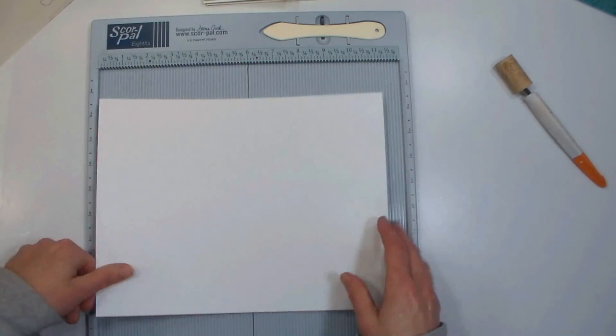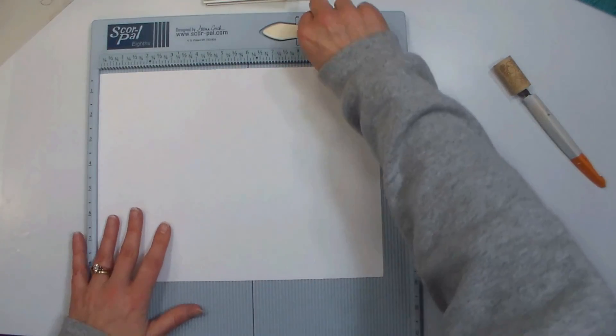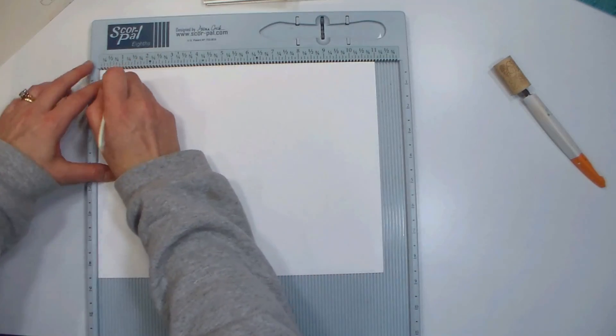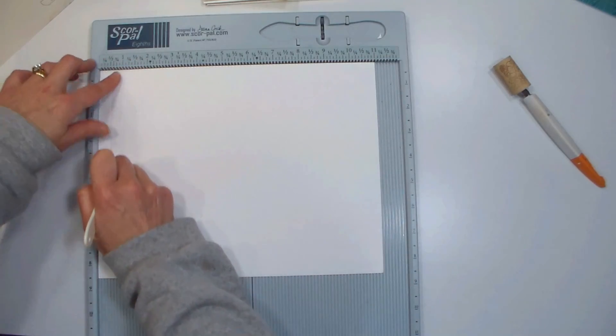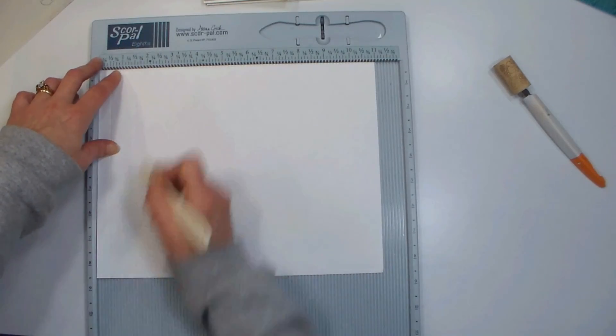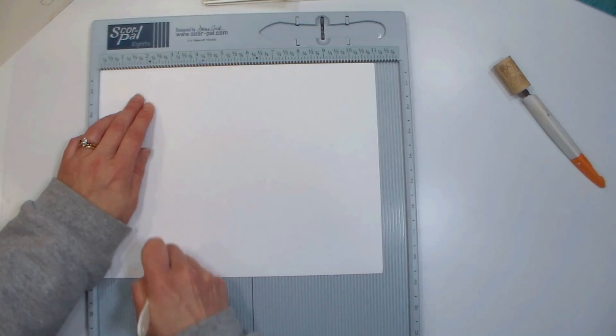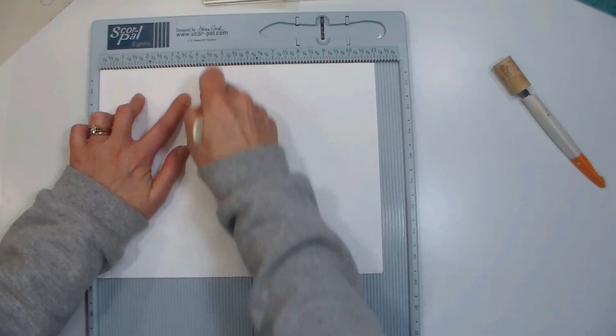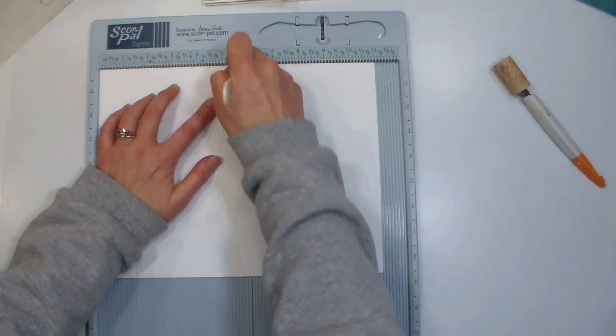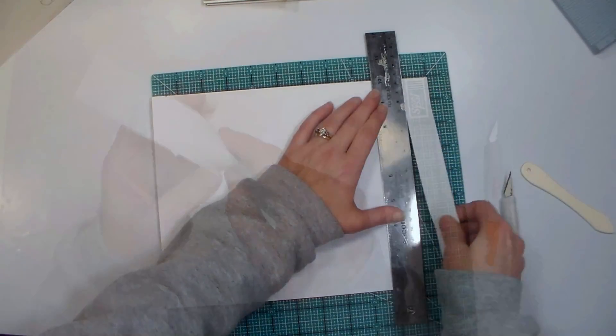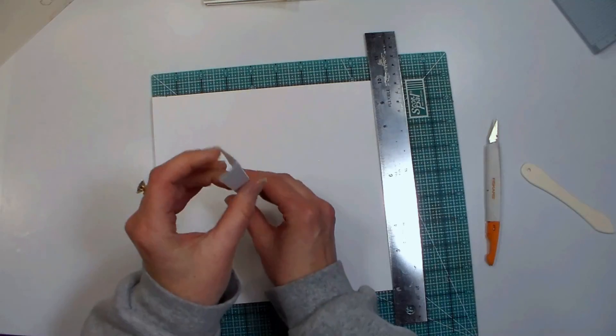So to put these pieces together, because each of the box pieces we made are the actual size of the box, we need to make some construction strips. To do that, I am scoring an eight and a half by eleven piece of cardstock every inch, but I'm scoring on the half inch. So I'm scoring at half inch, inch and a half, two and a half, three and a half, and so on. Then I'll go and trim those apart at one inch, so each strip will be one inch wide with a score down the middle.